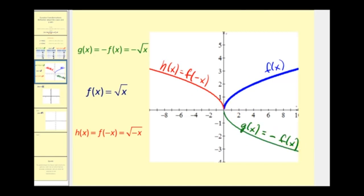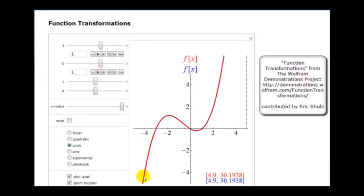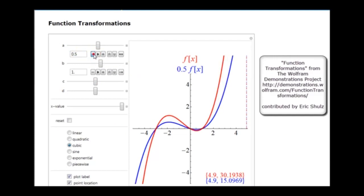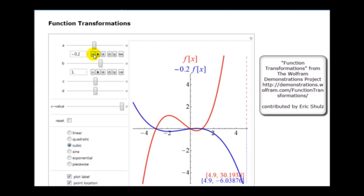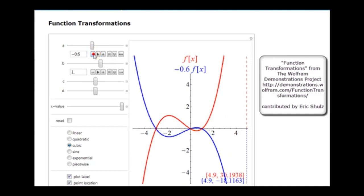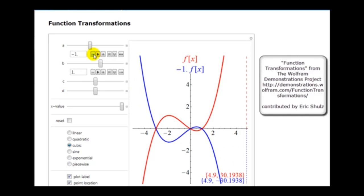Let's take a look at an animation of this. What we see here is the original function in red, and we'll see the transformed function in blue. We'll start by changing the value of a from positive 1 to negative 1. Here you are seeing a vertical compression, and then as soon as a turns negative, we'll see a reflection across the x-axis. And as soon as a equals negative 1, the transformed function in blue is a perfect reflection of the original function in red across the x-axis.